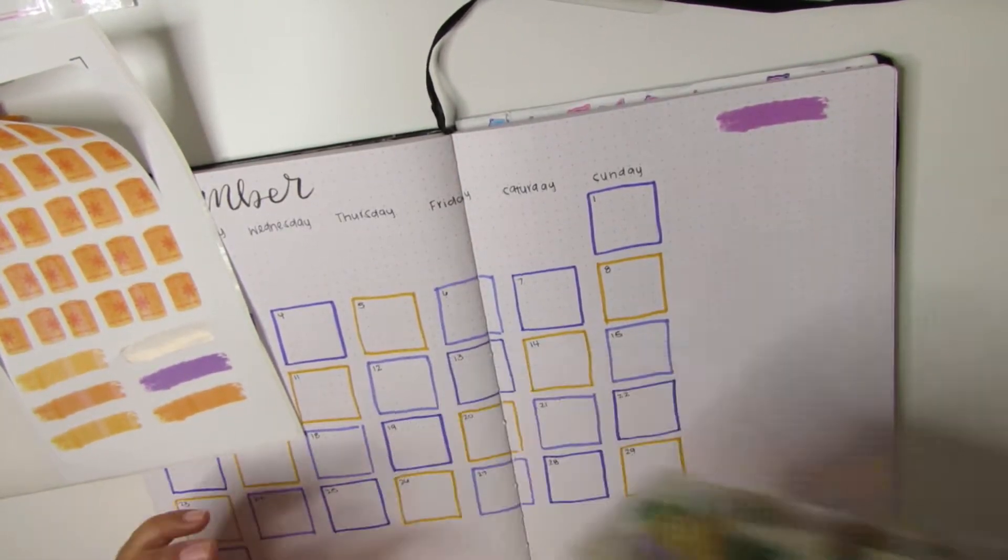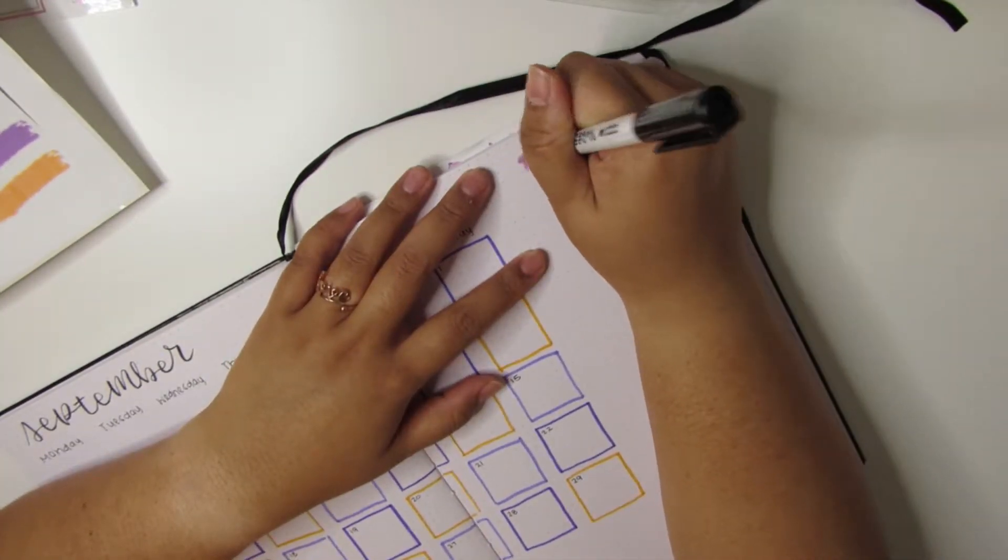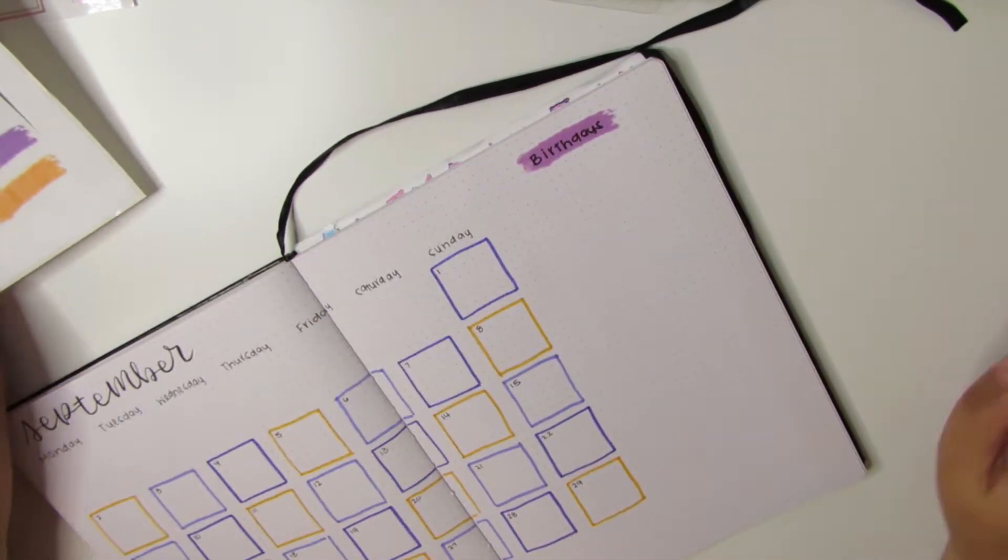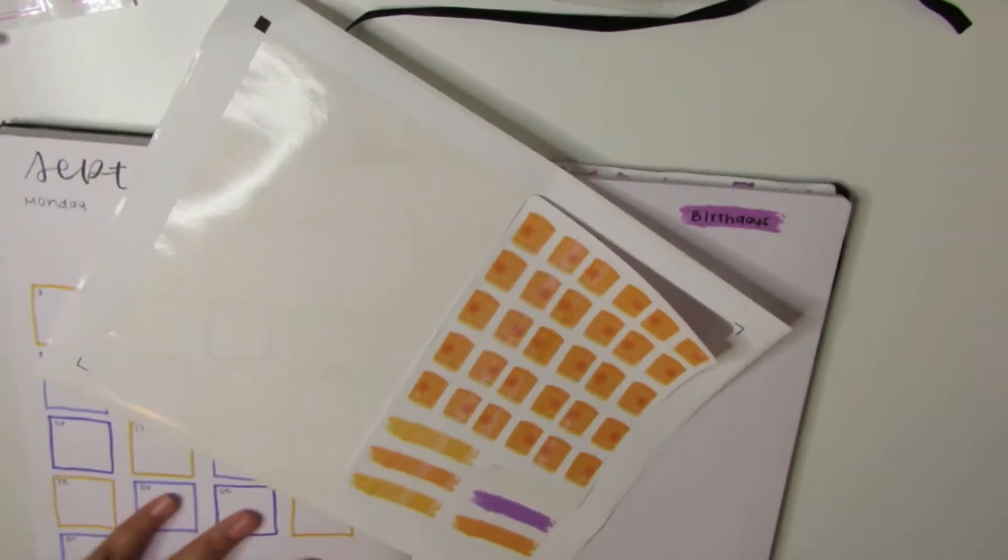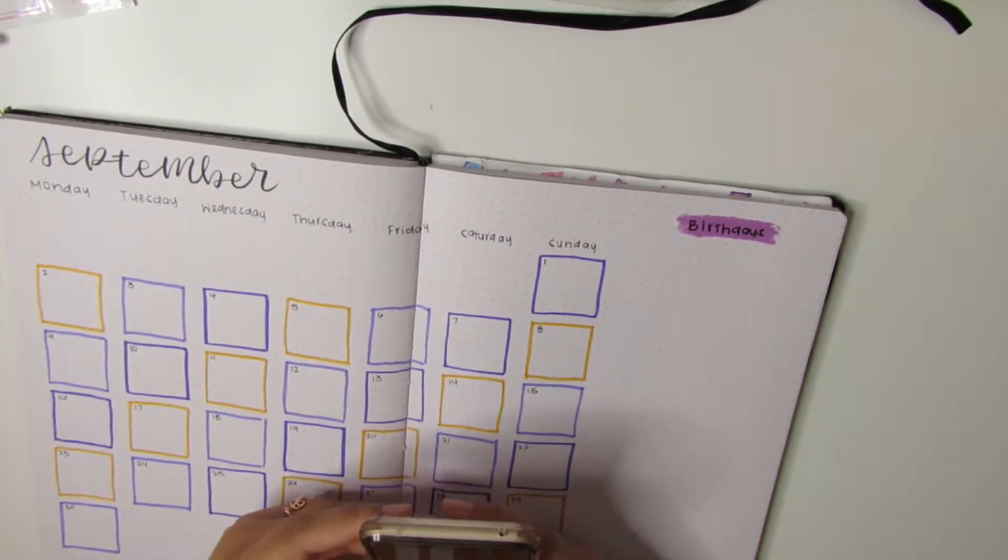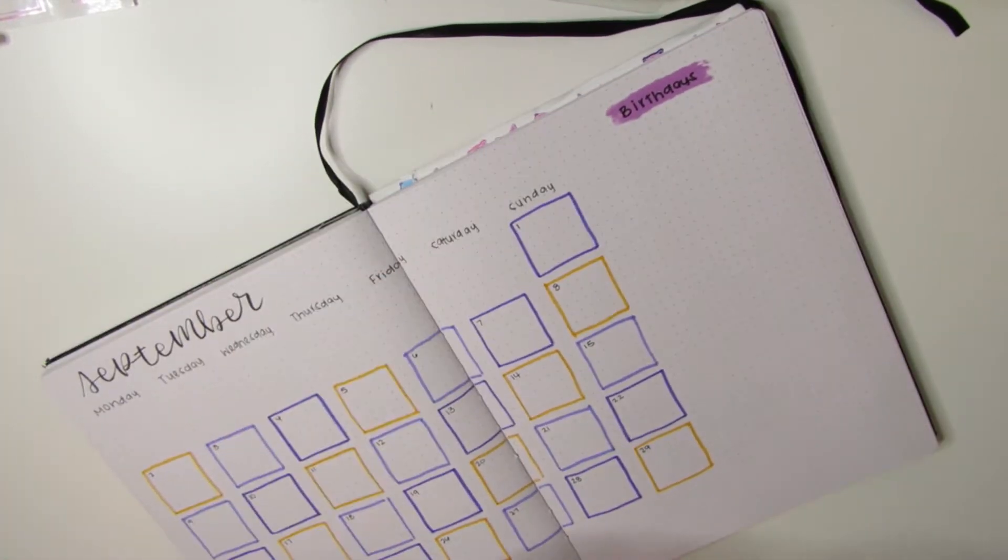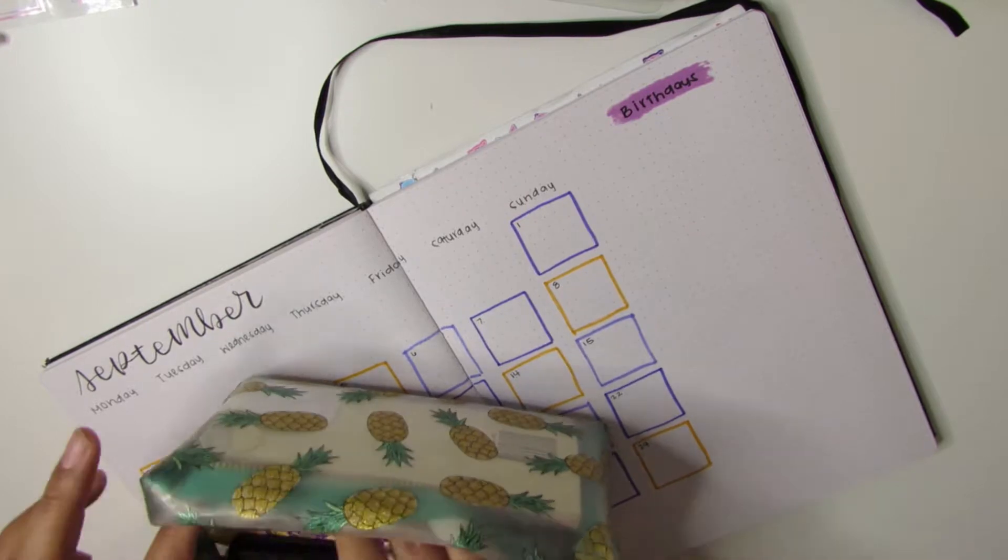I'm taking this marker that I got from one of those Daiso-like stores here in Vegas called Sayo. I really love it for writing on these stickers.